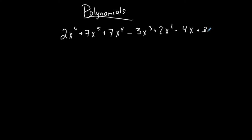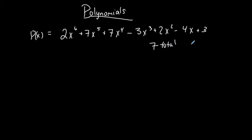This is a polynomial expression. If I represent it as f(x), it's a polynomial function. If I set it equal to zero, it's a polynomial equation. Counting the terms, it has 1, 2, 3, 4, 5, 6, 7 terms total. The terms are separated by pluses and minuses.